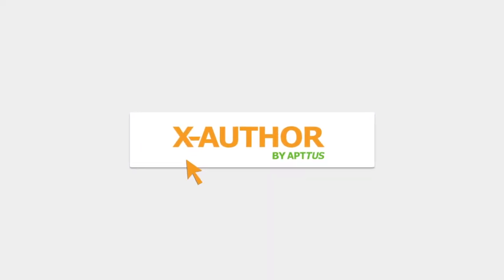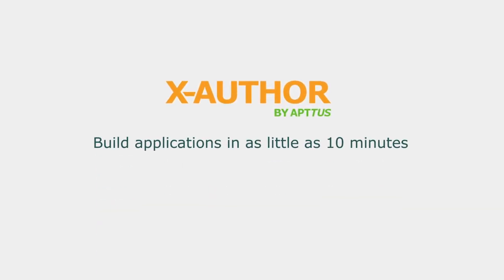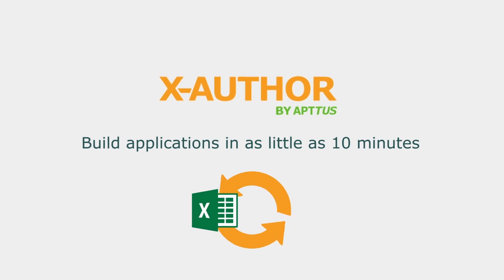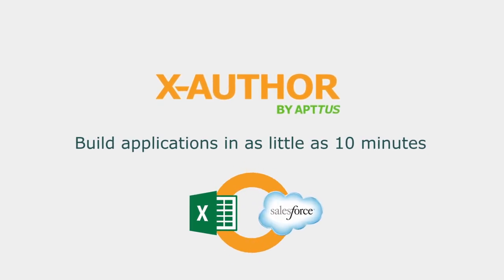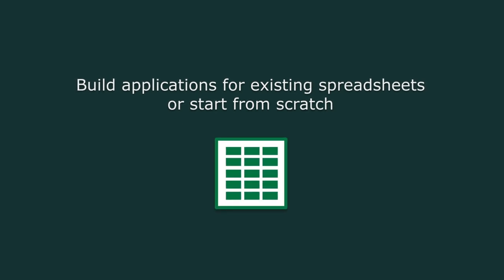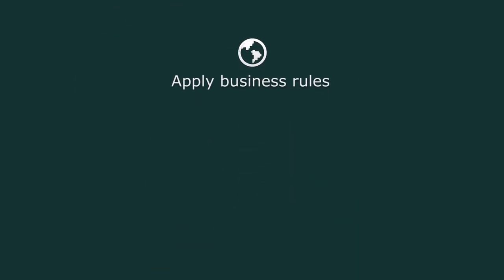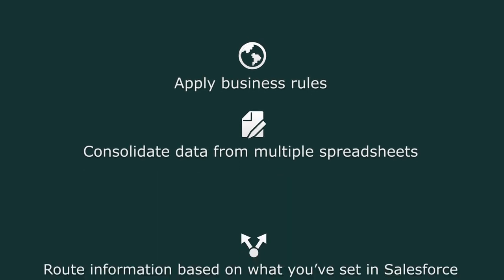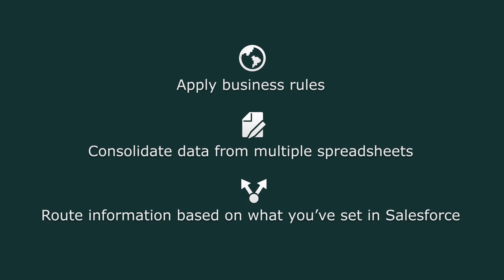Using the point-and-click XAuthor designer, you can build applications in as little as 10 minutes that map and sync data between any Excel cell and any Salesforce object, standard or custom. You can build applications for existing spreadsheets or start from scratch. You can apply business rules, consolidate data from multiple spreadsheets, and route information based on what you've set in Salesforce.